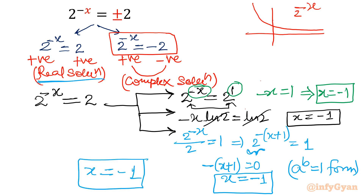Now let's see the graph. This curve is 2 raised to the power minus x, and this straight line is the constant function y equal to 2. Their intersection gives our solution x equal to negative 1. If we also plot minus 2, the line below the x-axis will have no intersection with 2 raised to the power minus x, confirming no real solution is possible for the negative case.